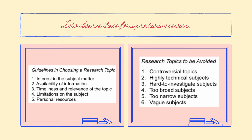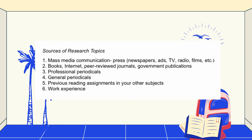But once you're an expert researcher, then you can explore these topics deeper. Sources of research topics: you can use mass media communication or the press — for example, newspapers, advertisements, TV shows, radio, films, and many more. You may also read from books, internet, peer-reviewed journals, government publications, professional periodicals, general periodicals, and previous reading assignments in your other subjects. Just make sure to cite your sources, and also your work experiences.